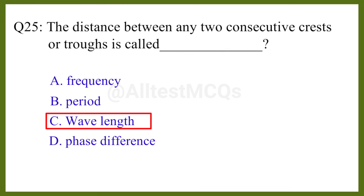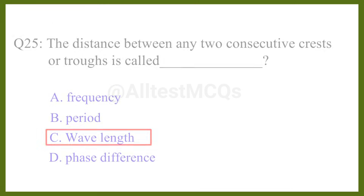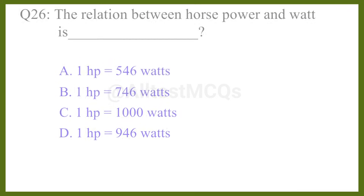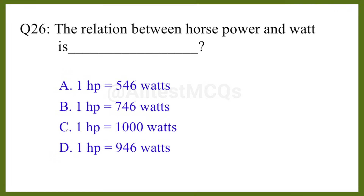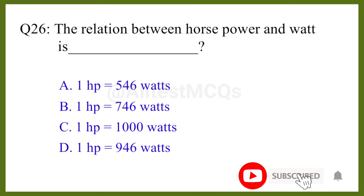Question number twenty-five: The distance between any two consecutive crests or troughs is called the correct answer is option C: wavelength. Question number twenty-six: The relation between horsepower and watt is the correct answer is option B.